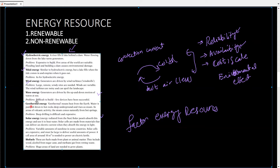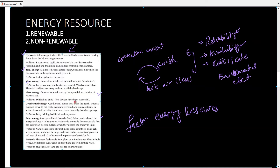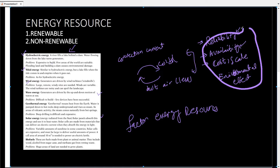For wave energy, it is difficult to build and very few devices have been successful in using waves as an energy resource. For geothermal energy, the problem is that deep drilling is difficult and expensive. For solar energy, there is a variable amount of sunshine in some countries, and solar cells are expensive and must be large to deliver a useful amount of solar power. For biofuels, huge areas of plants are needed to grow for decomposition and creating biogas.